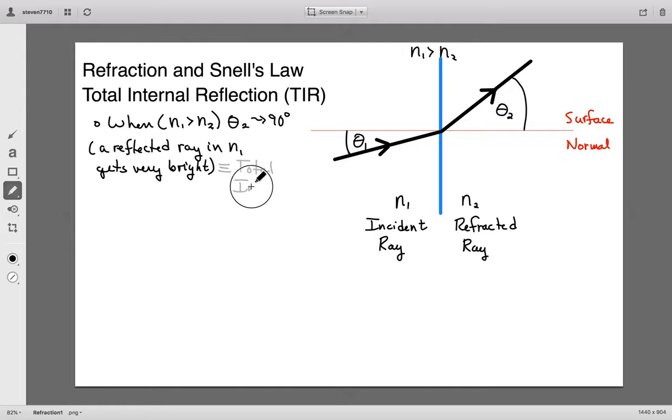And the value of the incident angle at that case, in this situation, when that happens, is called the critical angle for total internal reflection.